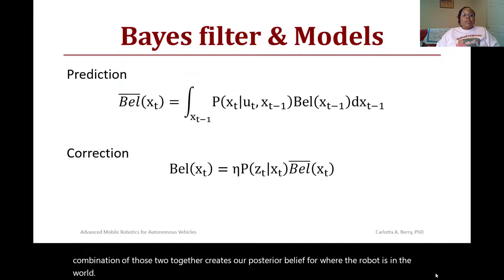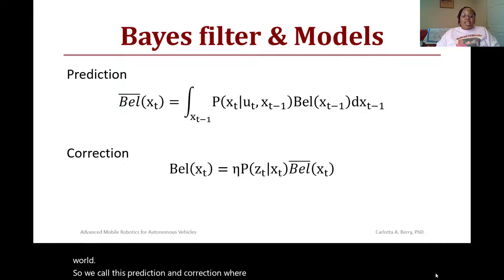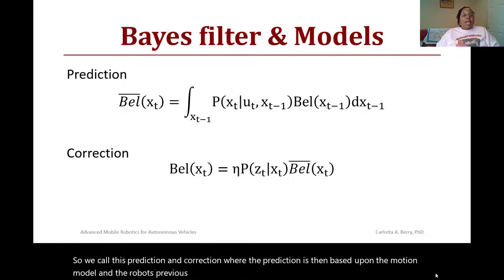We call this prediction and correction, where the prediction is based upon the motion model and the robot's previous state, and then we correct that prediction based upon our sensor data and our normalization constant.